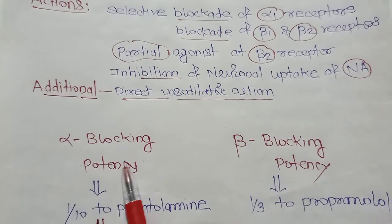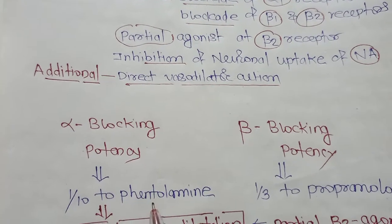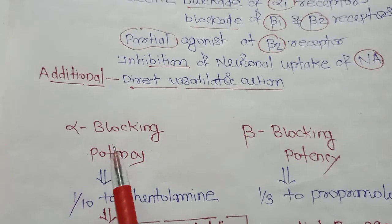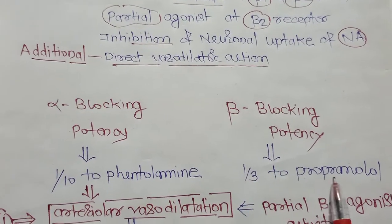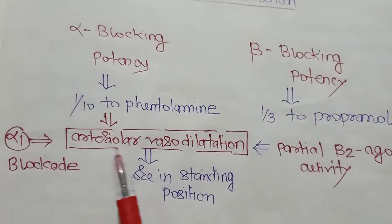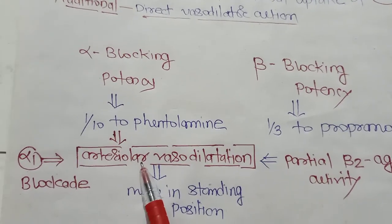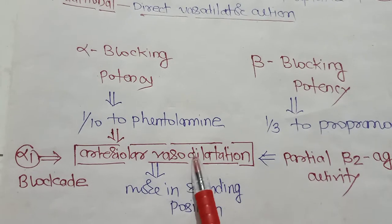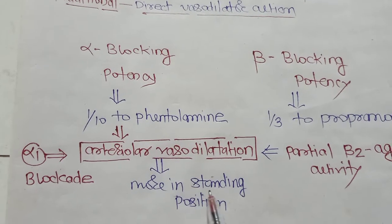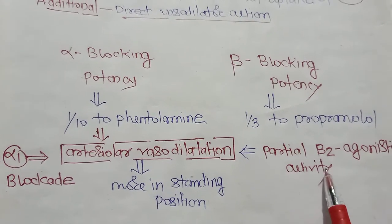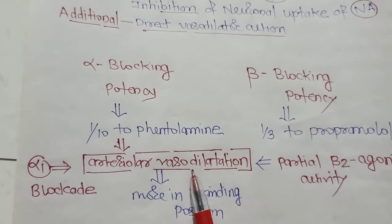Regarding potency: Labetalol has alpha blocking effect, but if you compare this alpha blocking potency with phentolamine, it is one-tenth of phentolamine. Beta blocking potency is one-third of propranolol. Alpha-1 receptor blockade leads to arteriolar vasodilation, which is prominently seen in the standing position. Partial beta-2 agonistic activity is also responsible for this arteriolar vasodilation.